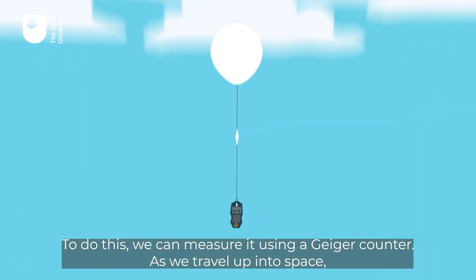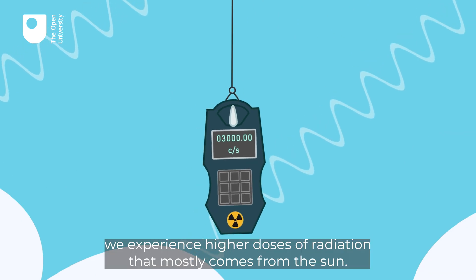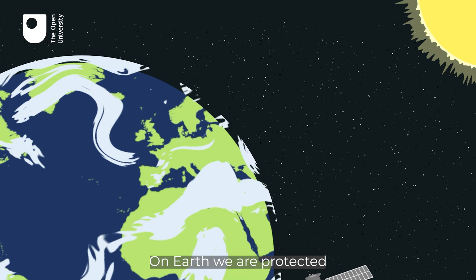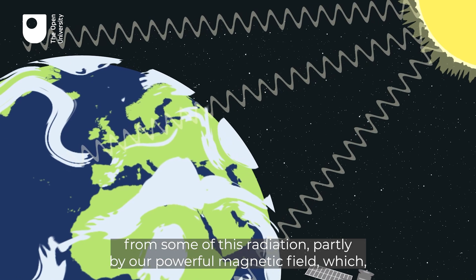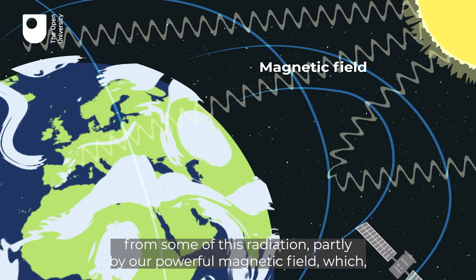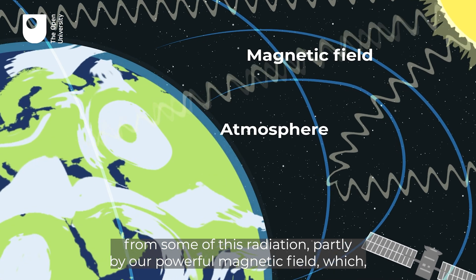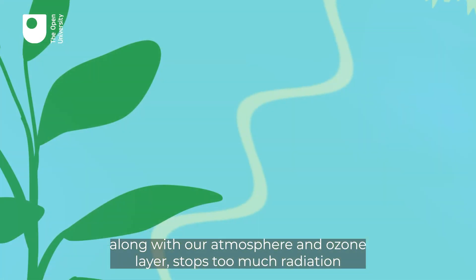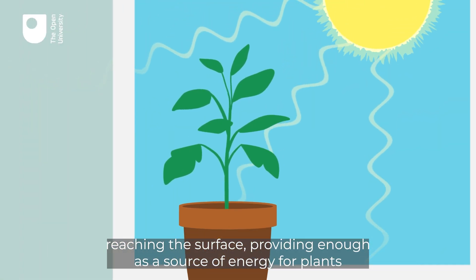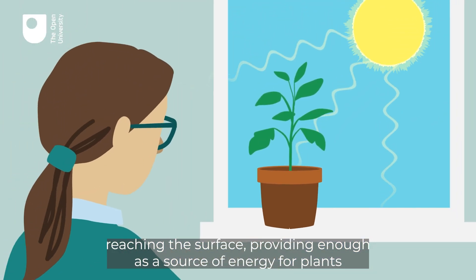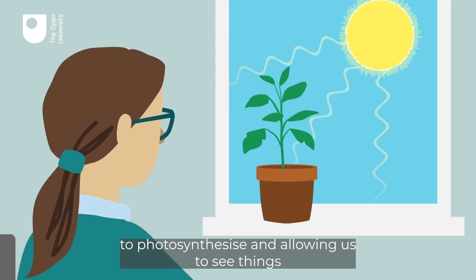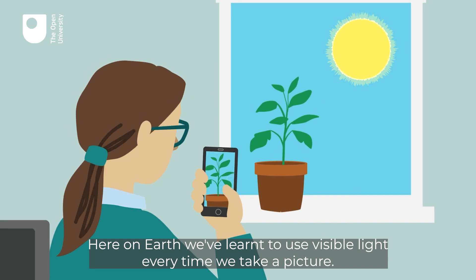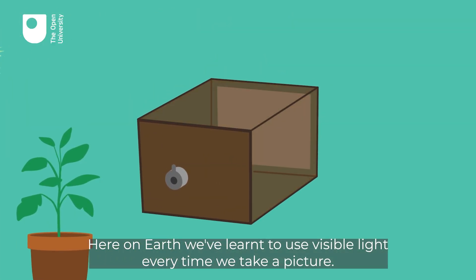As we travel up into space away from the Earth we experience higher doses of radiation that mostly comes from the Sun. On Earth we're protected from some of this radiation partly by our powerful magnetic field, which along with our atmosphere and ozone layer stops too much radiation reaching the surface, providing enough as a source of energy for plants to photosynthesize and allowing us to see things.